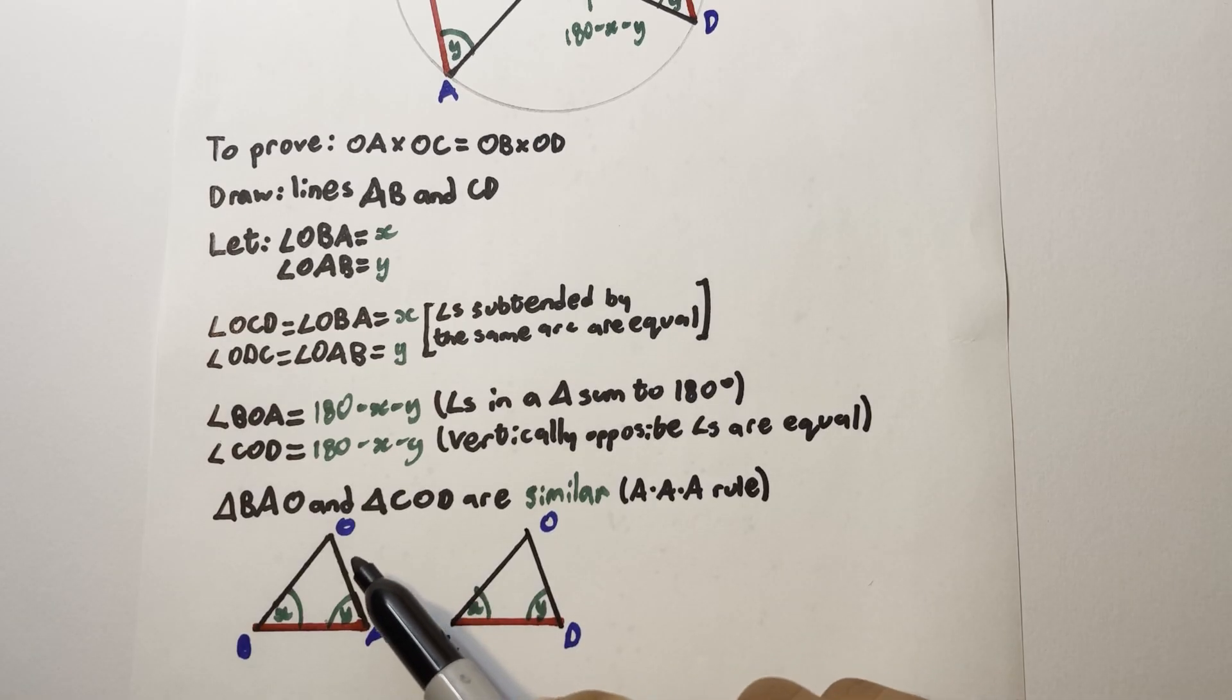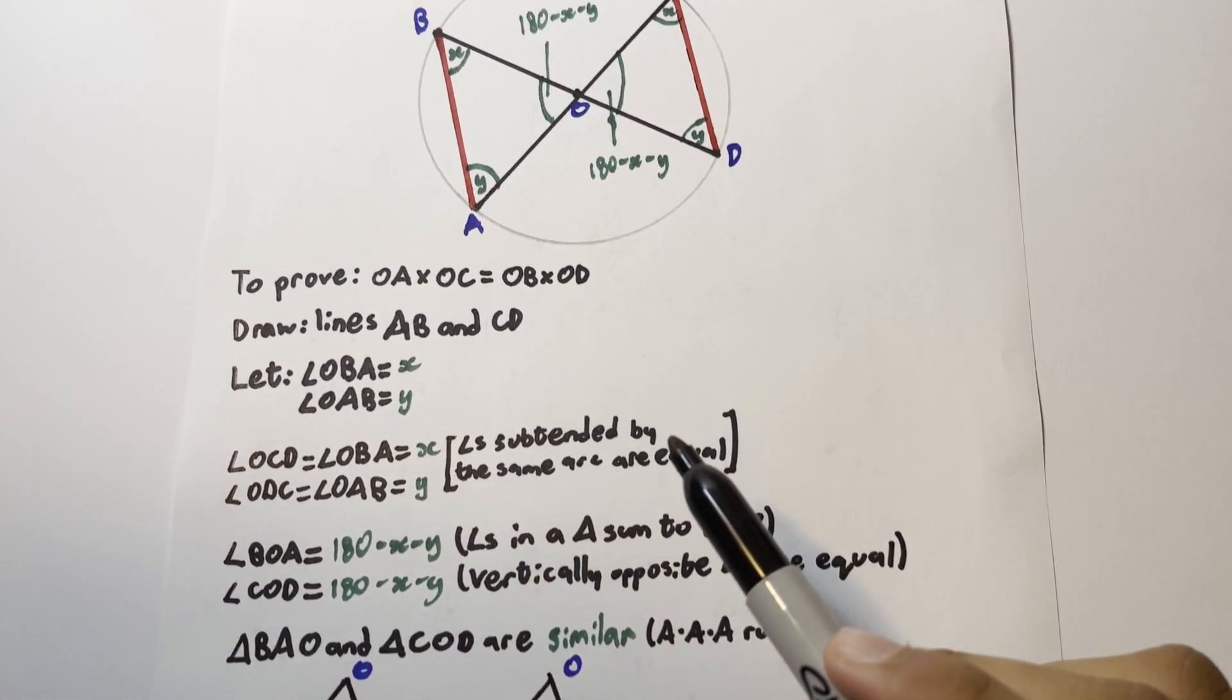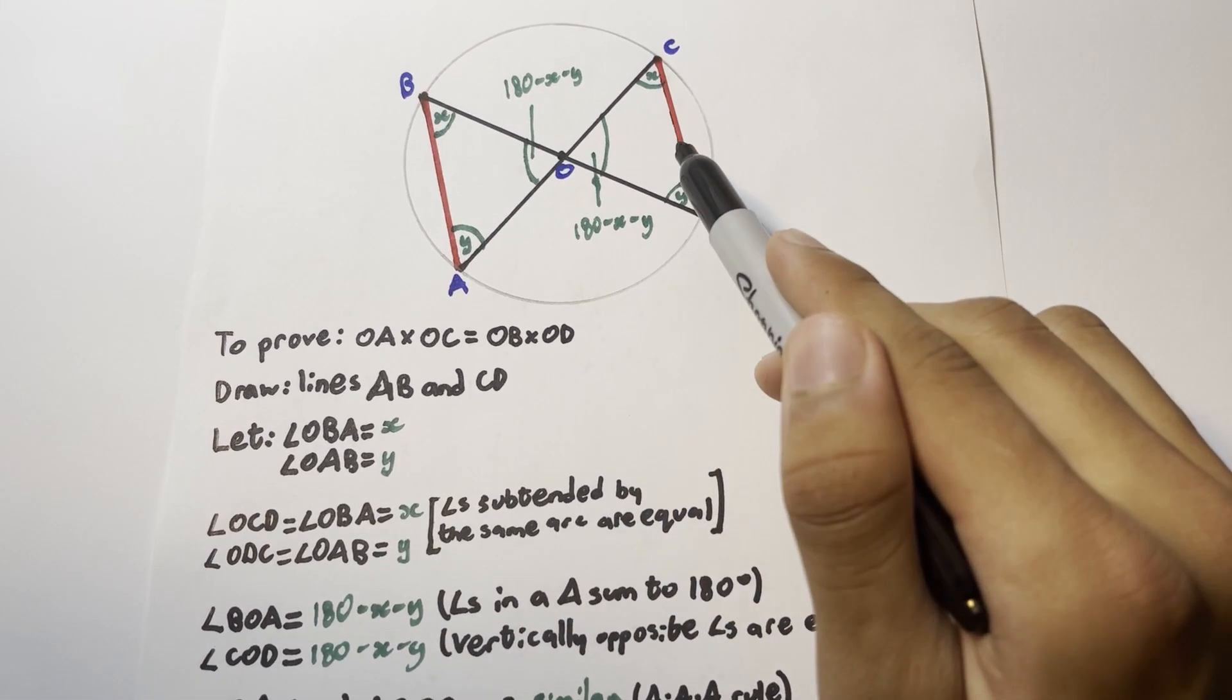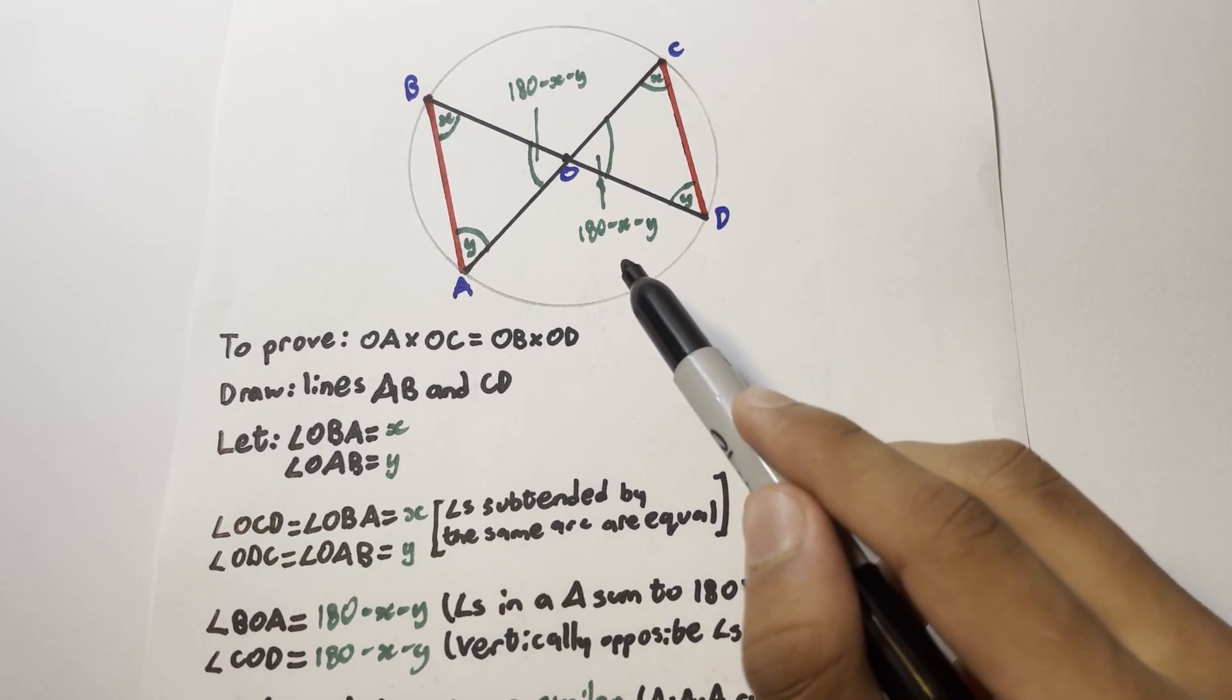Now I've redrawn both triangles BAO and triangles COD, making sure that both sides are aligned because of the angles x between them and the angles y between them. Notice that you might have to rotate them from how they appear in the triangle, but once you work out their orientation, you can use the relationships between the sides to form an equation.